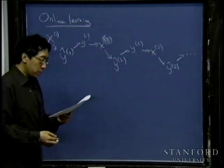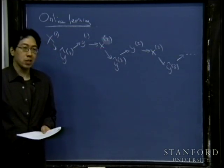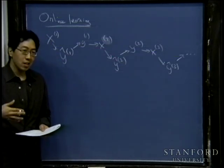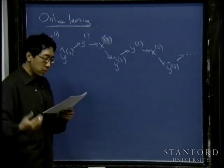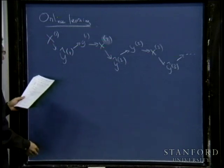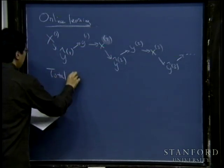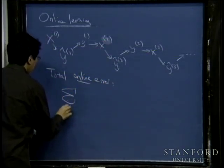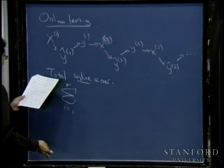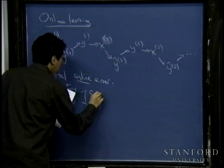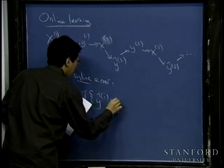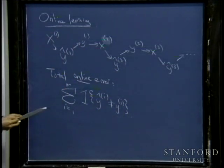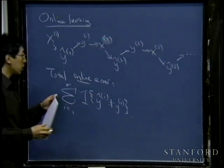Then I'll show you x2 and ask for a prediction, and you make a slightly more educated guess, call it y-hat 2. After your guess, I reveal the true label. And so on — x3, then your guess. This is a different model of machine learning than batch learning. It models settings where you have to keep learning even as you're making predictions. Imagine running a website where users are coming in and you need to start making predictions about what each user likes as they arrive. In online learning, what we care about is the total online error — the total number of mistakes you make on a sequence of m examples.